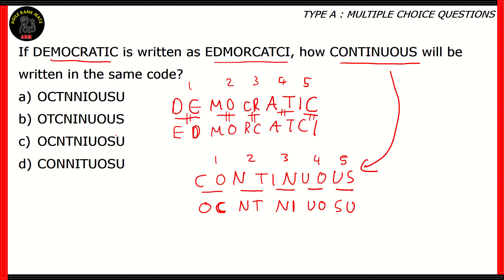The code starting with O-C would be right, so options B and D are incorrect. If you notice, the second pair does not change, which means for CONTINUOUS, N-T stays the same in the code. This means option C turns out to be the right answer and not option A, because option A unfortunately changed the position for the second pair, which is not how the code works. So finally, we got our answer — option C — which is O-C-N-T-N-I-U-O-S-U. That is the correct code for CONTINUOUS.